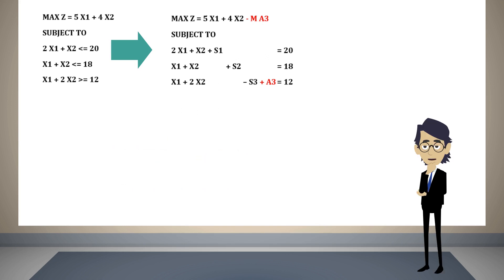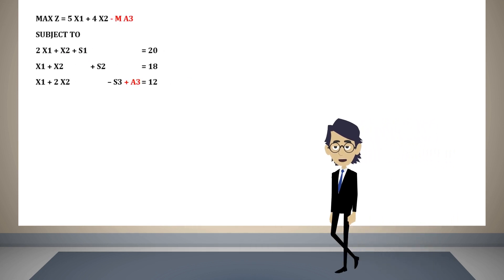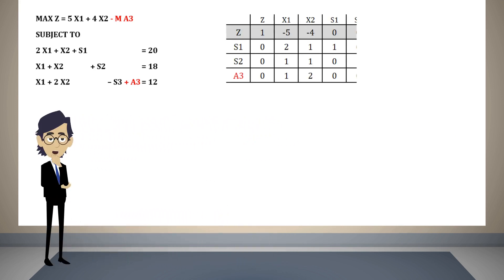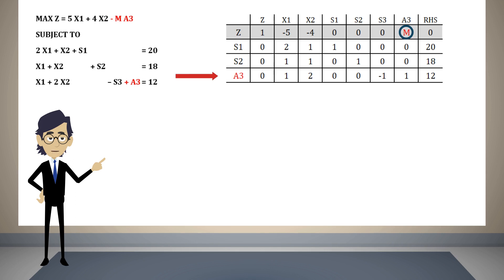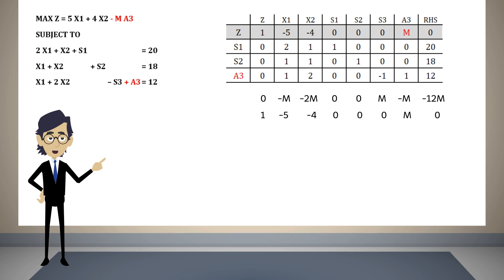We will now construct a new table for the modified problem. Observe that a3 is almost basic in row 3 — we only need to transform its objective function coefficient to 0. To do this we follow the usual simplex steps: multiply the a3 row by minus M and add it to the objective function row. After this multiplication and addition, we obtain the new objective function row, and our new table is complete.